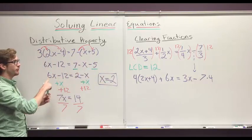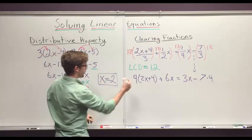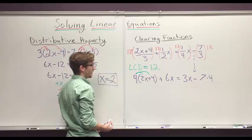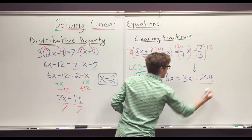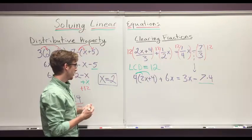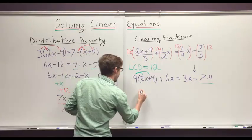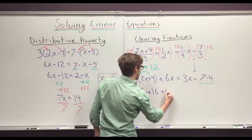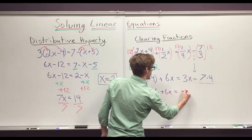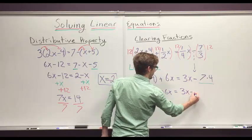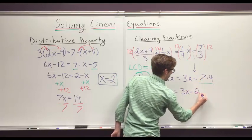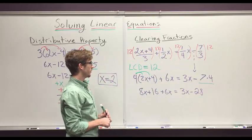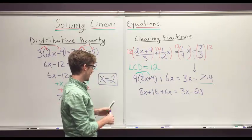We need to distribute this 4 and then we combine like terms, and we need to do some multiplication over here. So when we distribute, we get 8x plus 16 plus 6x equals 3x minus 24. I'm sorry, 28. Can't do the multiplication. 7 times 4 is 28, not 24.